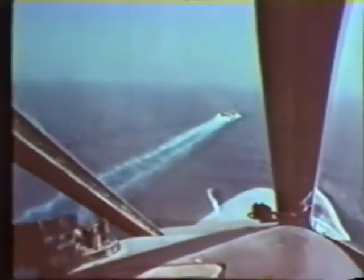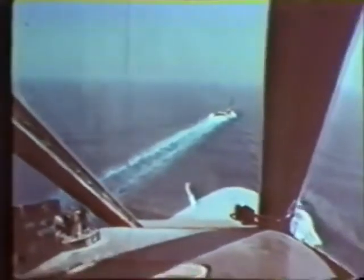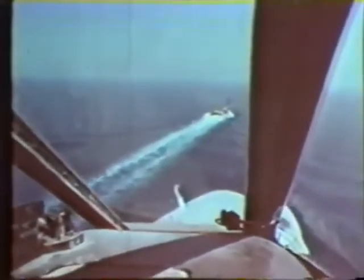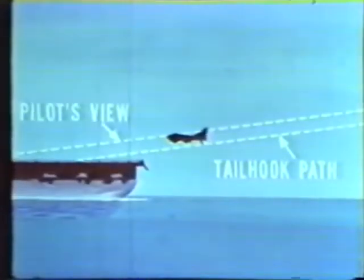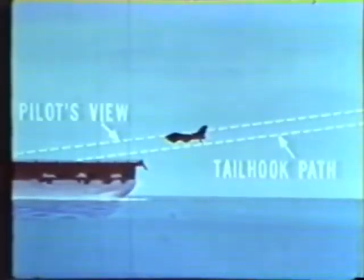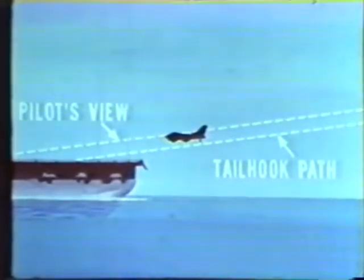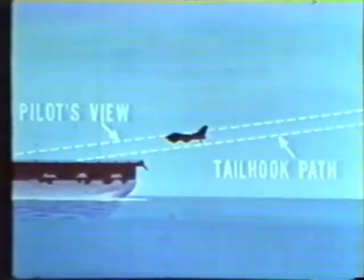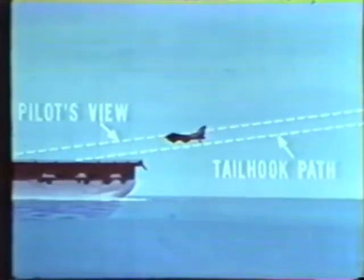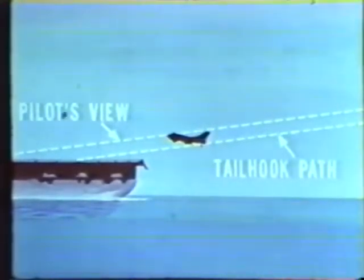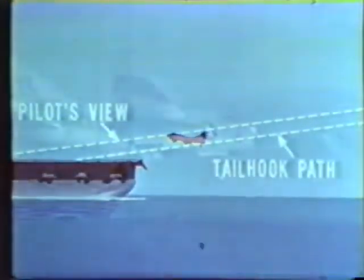Proper hook-to-ramp clearance is predicated on the hook-to-eye value for an on-speed aircraft. If the airspeed is too fast, the aircraft has a flatter attitude than optimum, and the tailhook is actually higher than the meatball would lead the pilot to believe. On the other hand, in a slow or cocked-up attitude, the tailhook is lower.